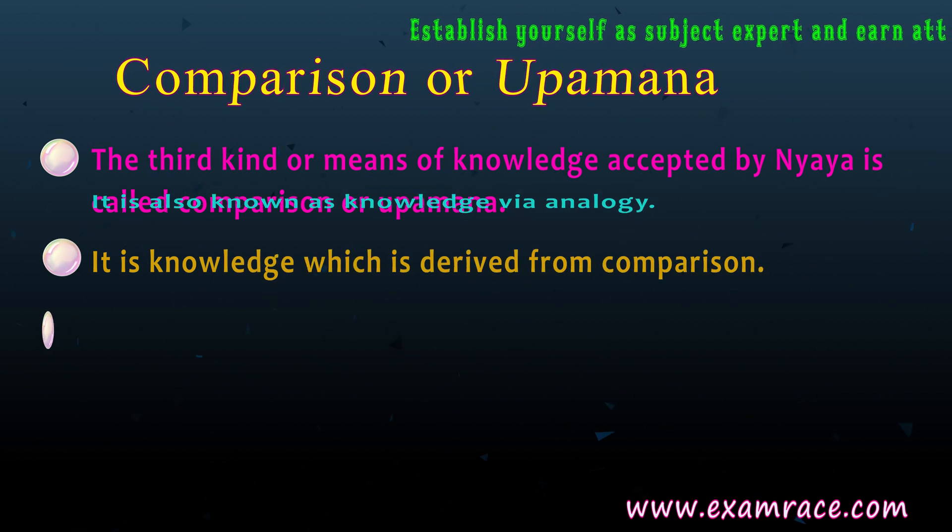Nyaya believes that the power in the word to denote its meaning is something which comes from God. Shabda or Verbal Testimony can be human or divine, but it is always personal in nature. According to Nyaya, testimony is of two kinds: A. Vedika and B. Lokika. The Vedika testimony is perfect and infallible in nature. They are believed to be spoken by God Himself. For example, the Vedas are spoken by God.